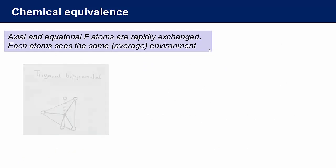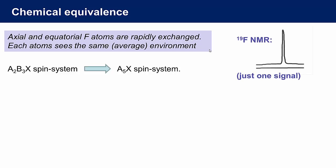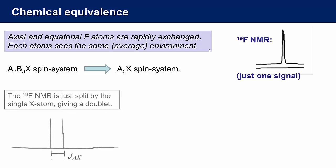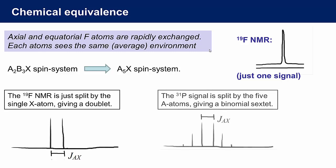So if the fluorine atoms in the different axial and equatorial sites are being rapidly exchanged, then, on average, each fluorine experiences the same chemical environment. Our A3B2X spin system becomes an A5X spin system, and for an A5X spin system, we would predict just one signal in the fluorine-19 NMR. And these A atoms will couple to the single X atom, the phosphorus, to give a doublet. While the NMR of the X atom, in this case the phosphorus atom, the signal will be split by the five equivalent spin-1 half A atoms into a binomial sextet, a six-line spectrum with a 1-5-10-10-5-1 intensity pattern. This is what we actually observe.